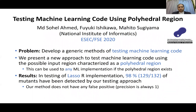Our method can be applied to any ML implementation if the Foley-Hydro region exists. In our result, by using the LASO-R implementation, we can detect 98% of mutants.